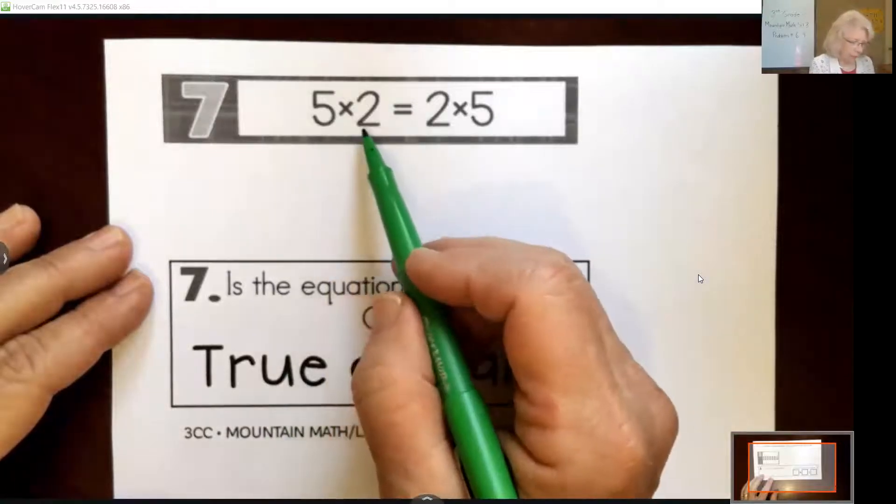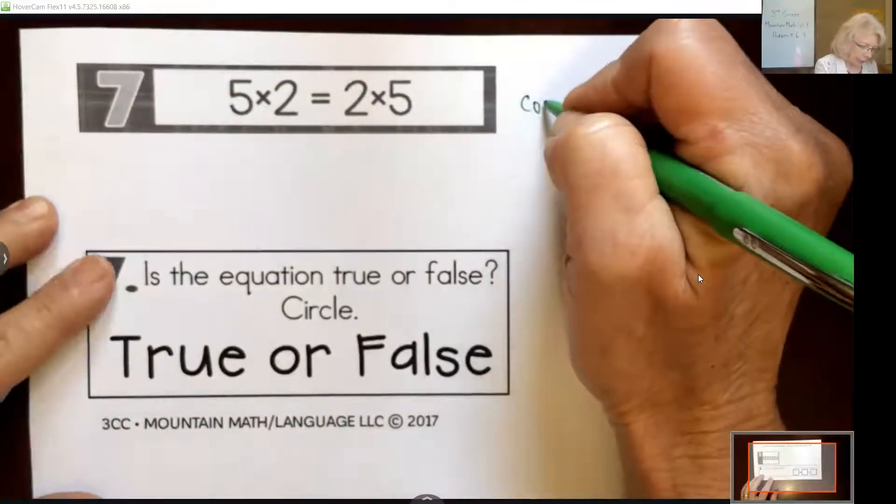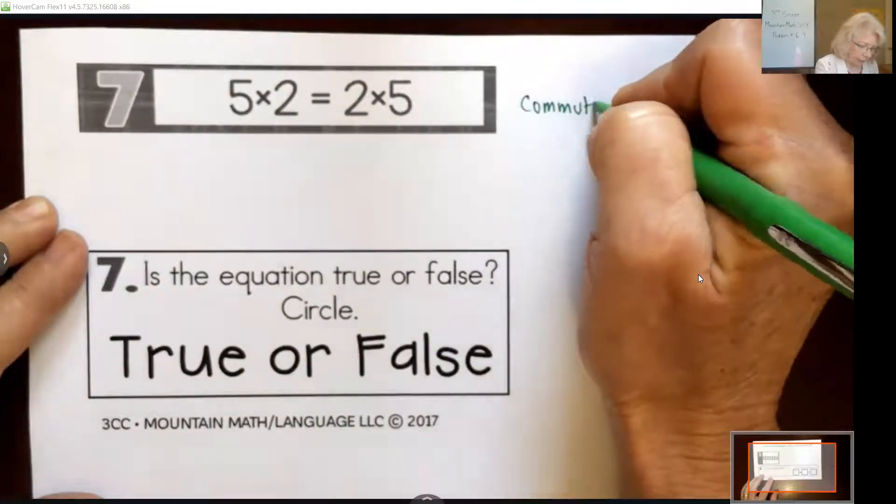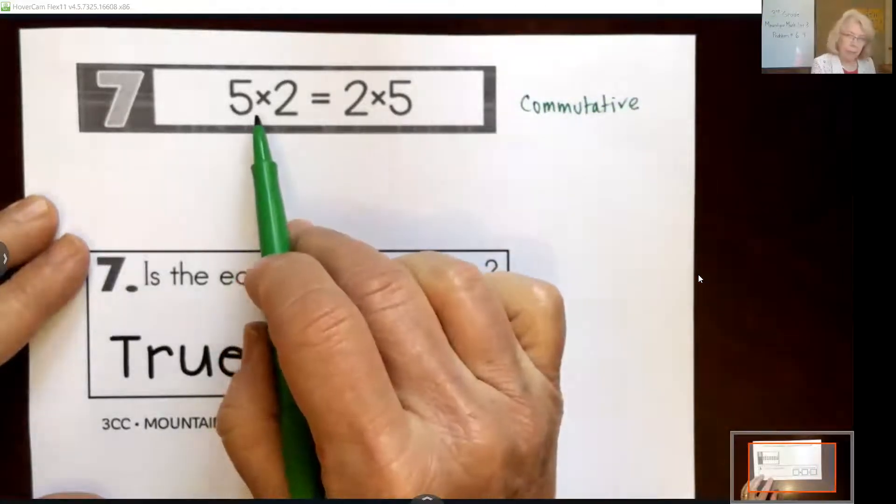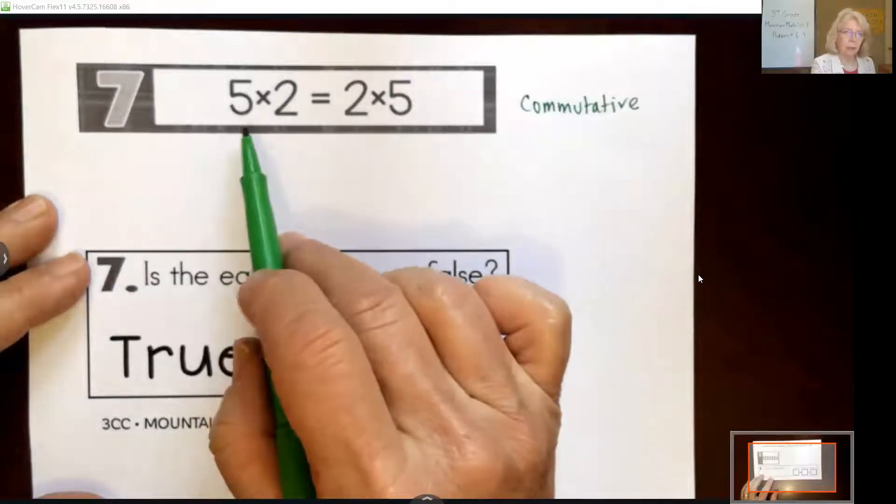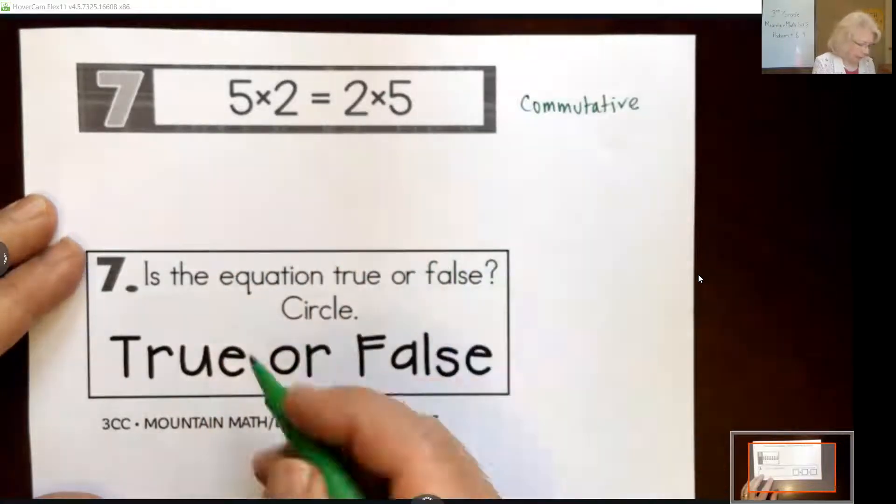Is 5 times 2 equal to 2 times 5? You might remember that's the commutative property, which says if our operation is all multiplication or all addition, we can change the order in which we do things. So this is definitely true.